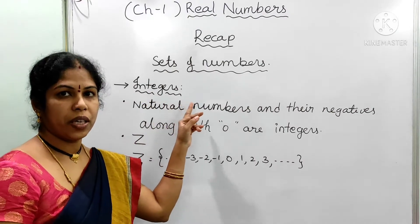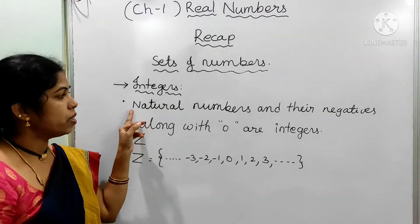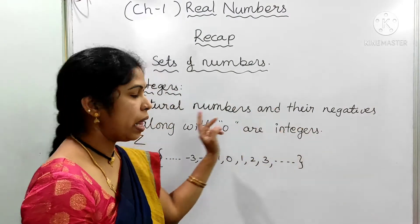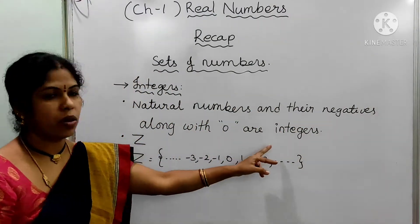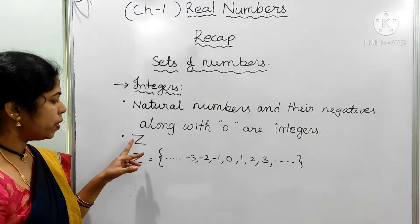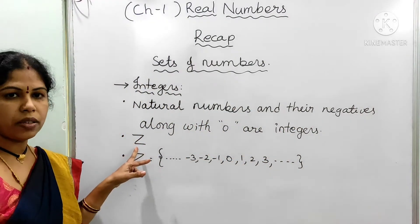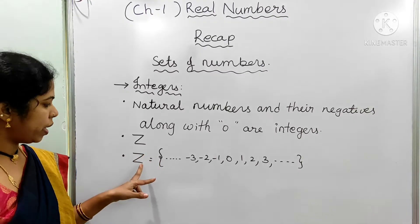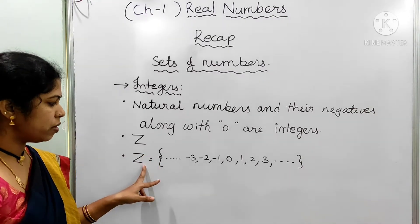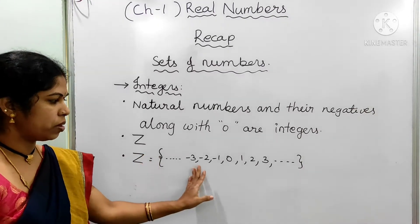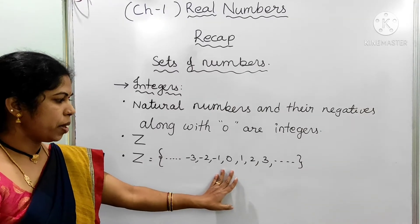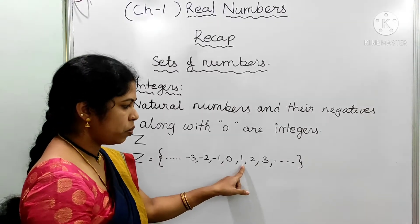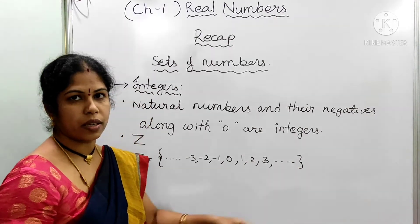You also learnt about integers. What are integers? Natural numbers and their negatives along with 0 are integers. We can denote integers with capital Z, and we can write the set of integers as Z = {..., -3, -2, -1, 0, 1, 2, 3, ...}.